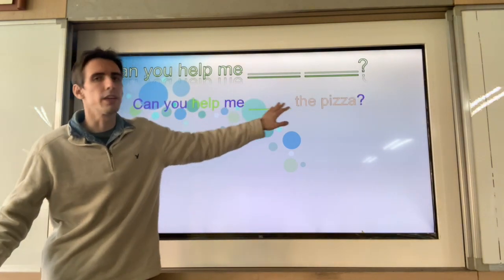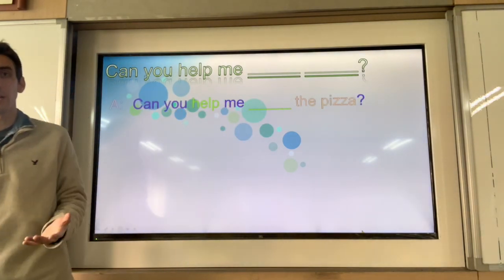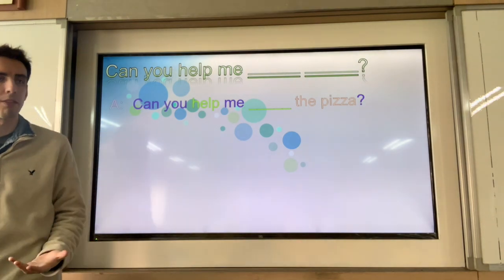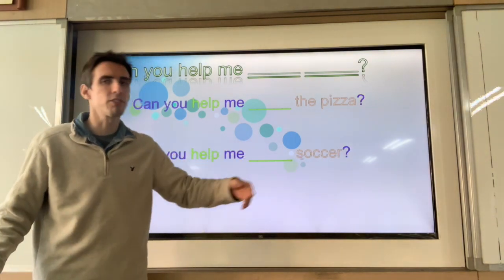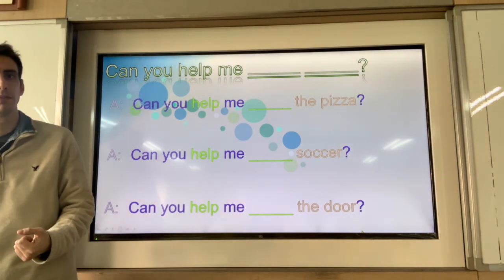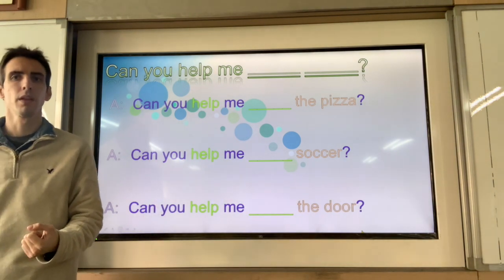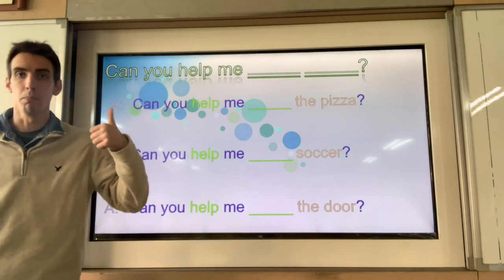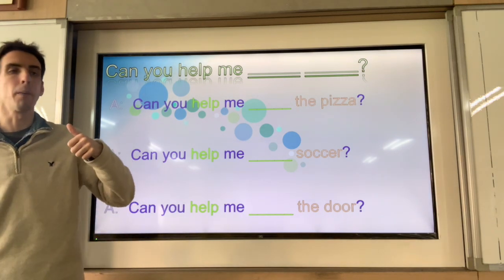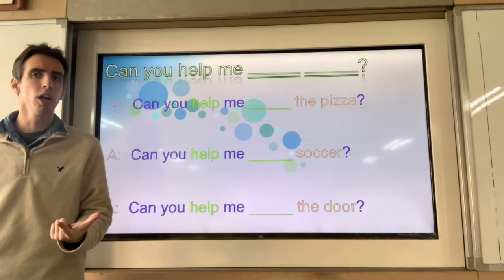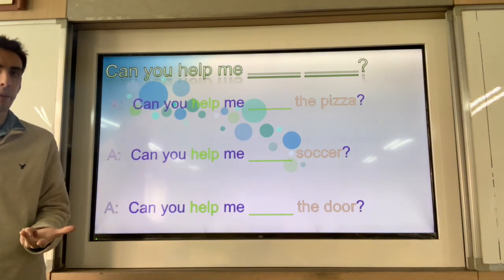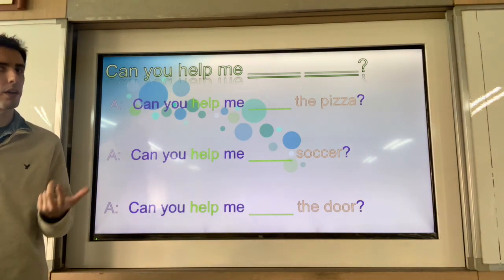Now I want you to give me the verb, like we did last time. Can you help me blank the pizza? Can you help me blank soccer? Can you help me blank the door? Can you help me make the pizza? Can you help me play soccer? Can you help me open the door?